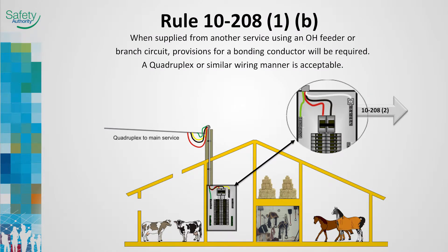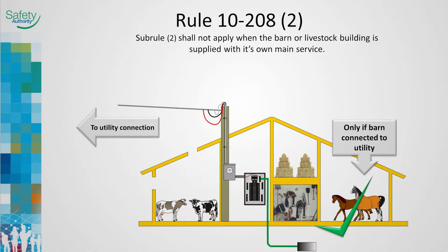Rule 10-208 requires provisions for a bonding conductor when supplied from another service using an overhead feeder. To comply with Rule 10-208-2, an overhead feeder or branched circuit supply will require a bonding conductor to be brought from the main service. When a standard triplex or quadruplex does not provide the required number of circuit conductors, installing a separate bonding conductor in accordance with Rule 12-308 and 4-008 will be acceptable. The neutral conductor must be grounded in compliance with Rule 10-106 where a barn or livestock building is supplied by its own main service and supplied by the utility.